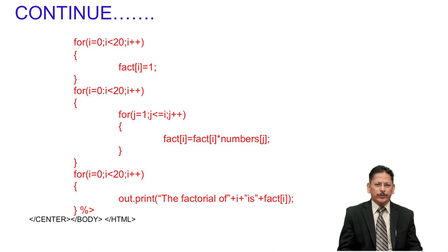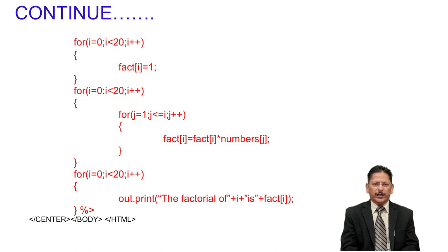The final for loop displays the output using out.print(). For each i from 0 to 20, it prints: 'Factorial of i is fact[i]'. So it displays factorial of 1 equals 1, factorial of 2 equals 2, factorial of 3 equals 6, and so on. Then center, body, and HTML tags are closed. This completes the factorial computation JSP program.